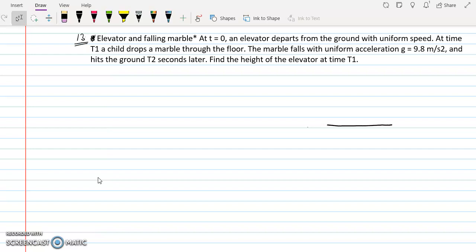The question says that suppose this is ground, and at t=0, an elevator starts moving up with uniform velocity u. At time t=t1, the elevator approaches the height h.